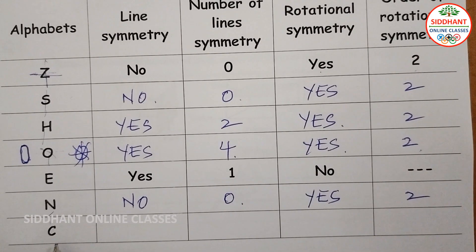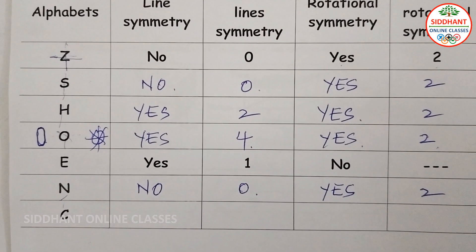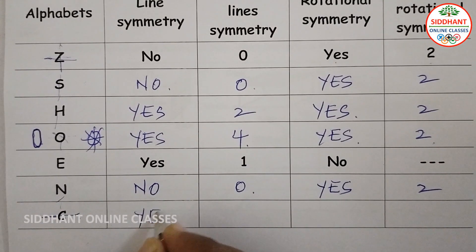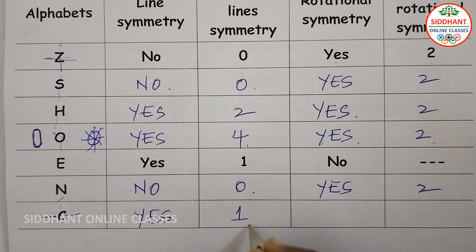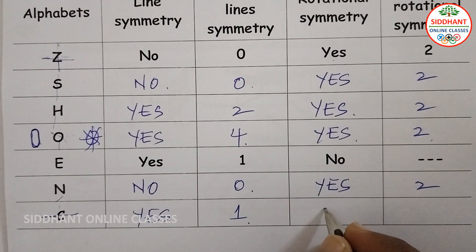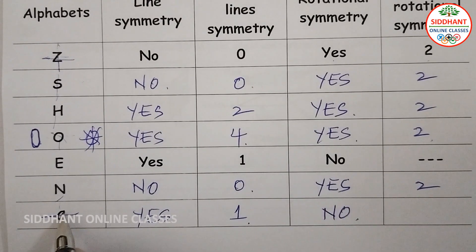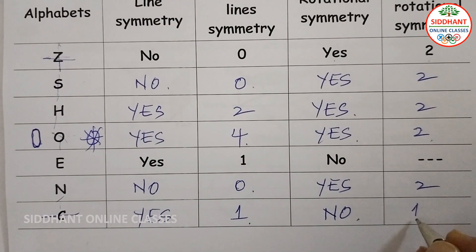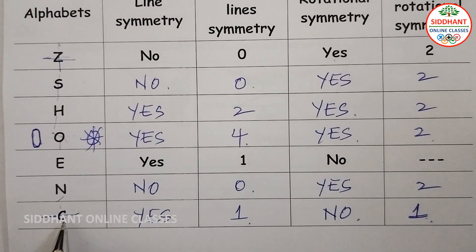Next, letter C. When you cut it horizontally, you get symmetry. So line of symmetry is Yes, and the number of lines is 1. For rotational symmetry, you cannot get any rotational symmetry, so it is No. However, when you rotate 360 degrees you always get the same figure, so the order is 1. Every figure will have at least order 1 compulsory.